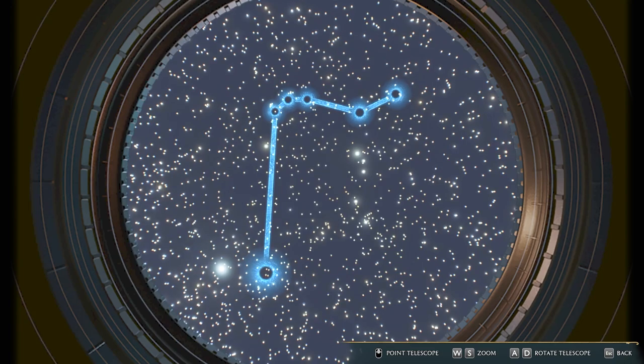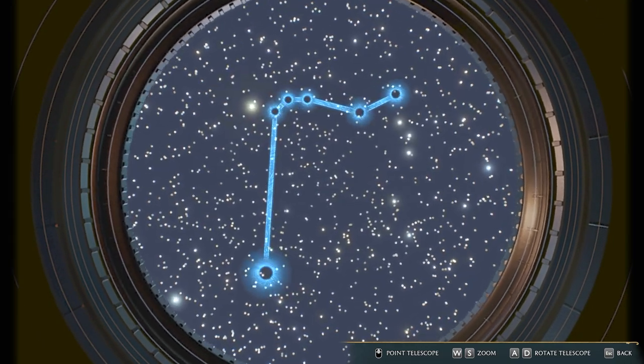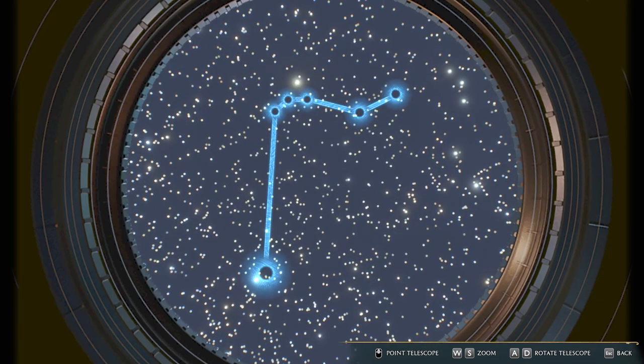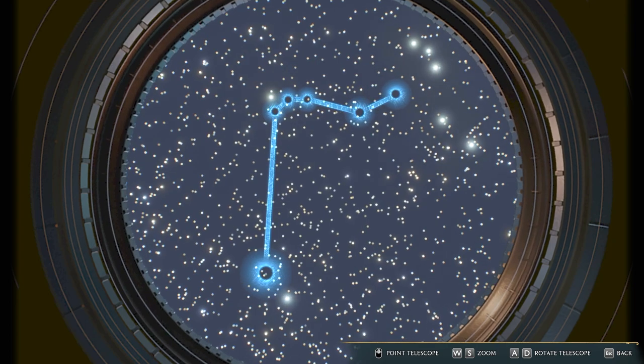Now when you're first using it you're probably like what on earth am I supposed to do? So you're supposed to zoom in and then rotate and then basically line up the constellation path that you have, the blue lines, with the stars that you see.